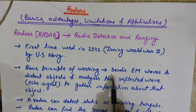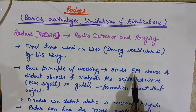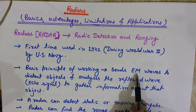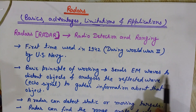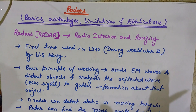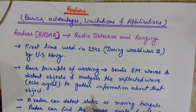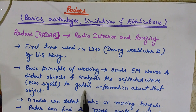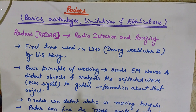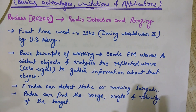The basic principle of working is that radar sends electromagnetic waves — radio waves are simply electromagnetic waves — to any distant object, and then it analyzes the reflected waves, or the echo signal obtained from the object. The target is analyzed and on the basis of that, information about that object is gathered.